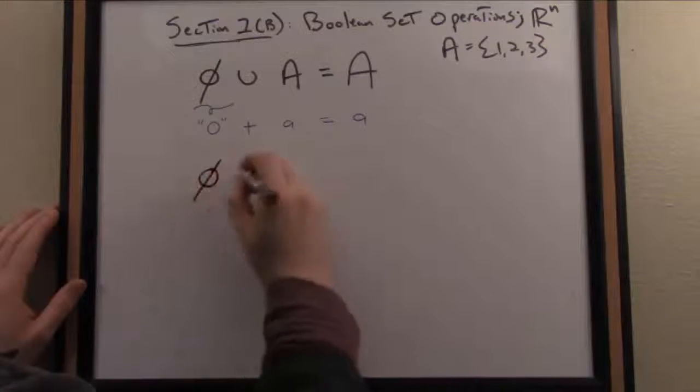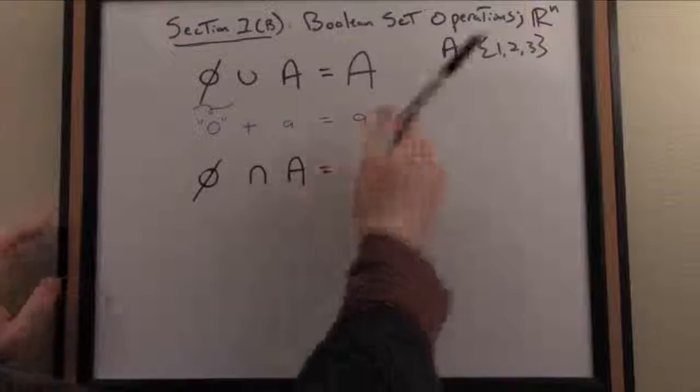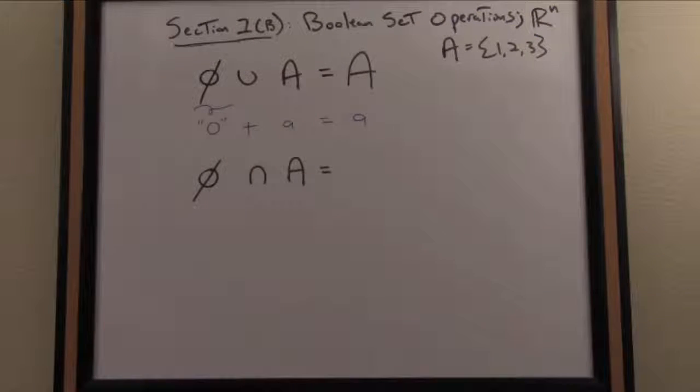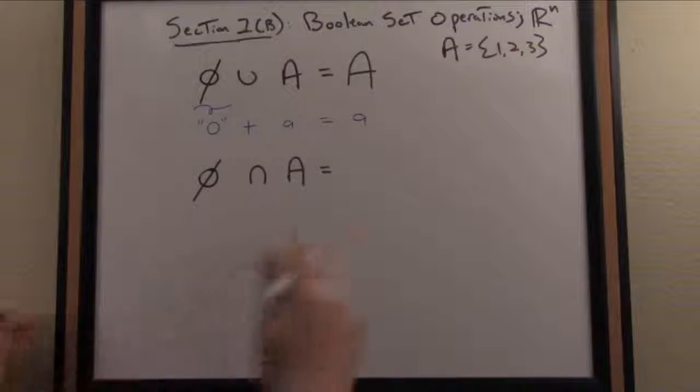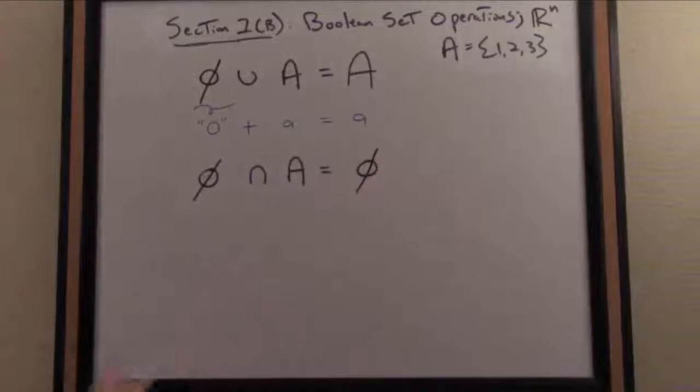Conversely, if I intersect the empty set with any set, because the empty set is empty by definition, there are no elements common to both sets. So that produces the empty set when I intersect it with any other set.